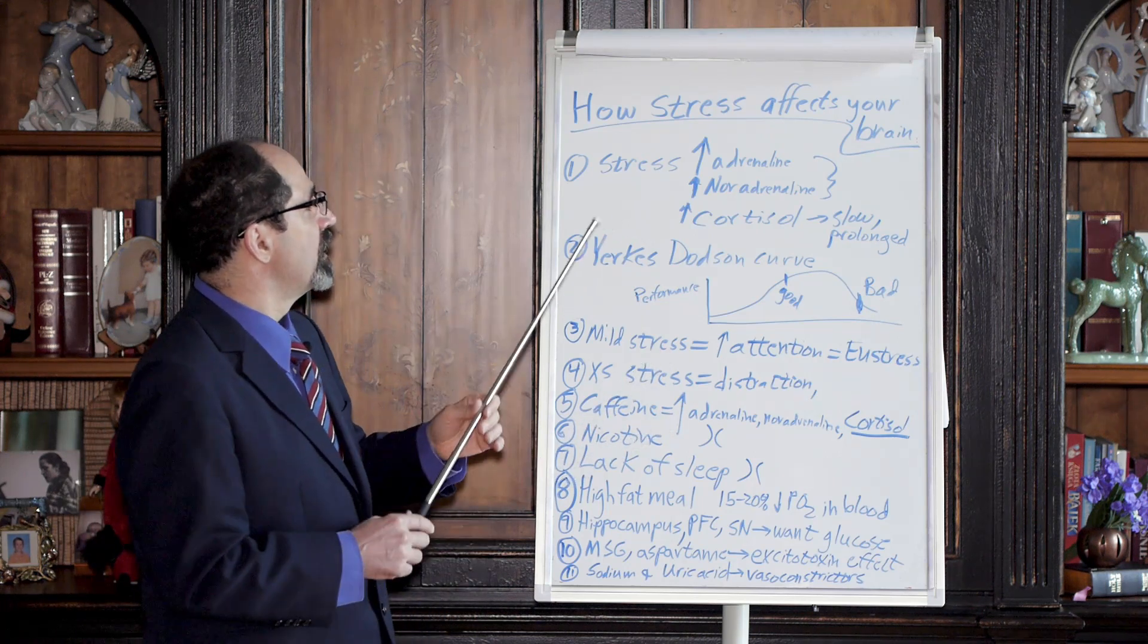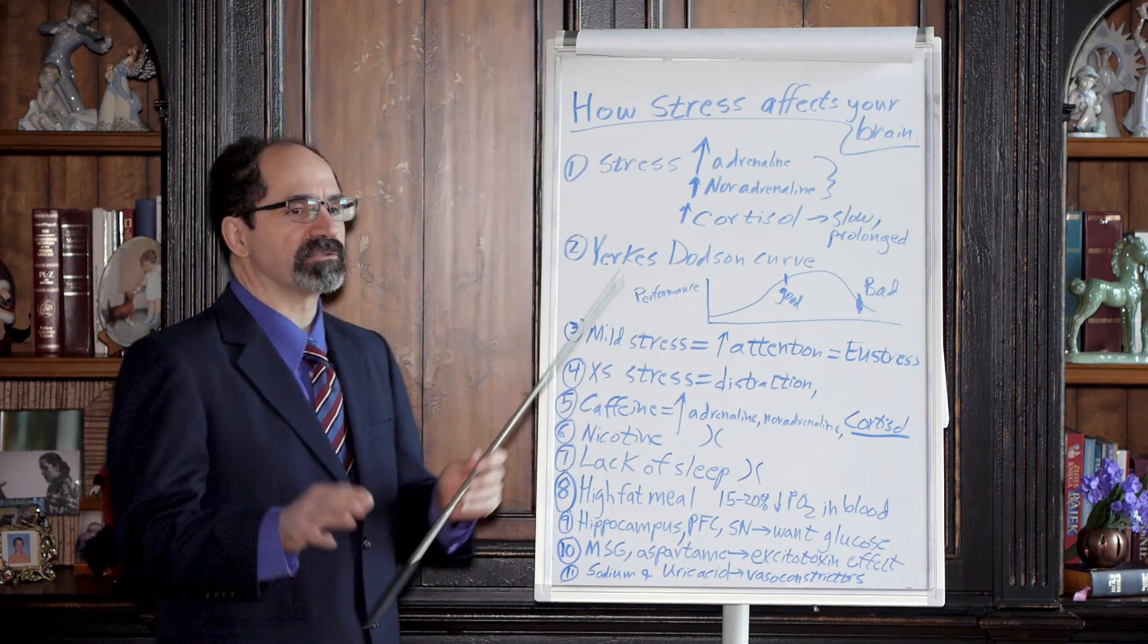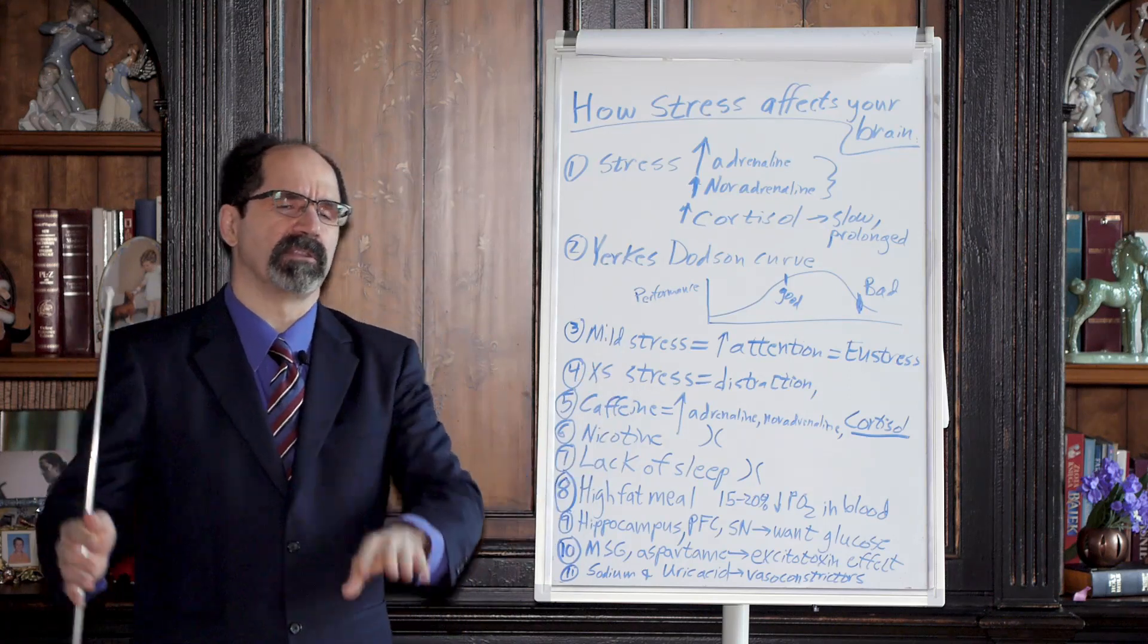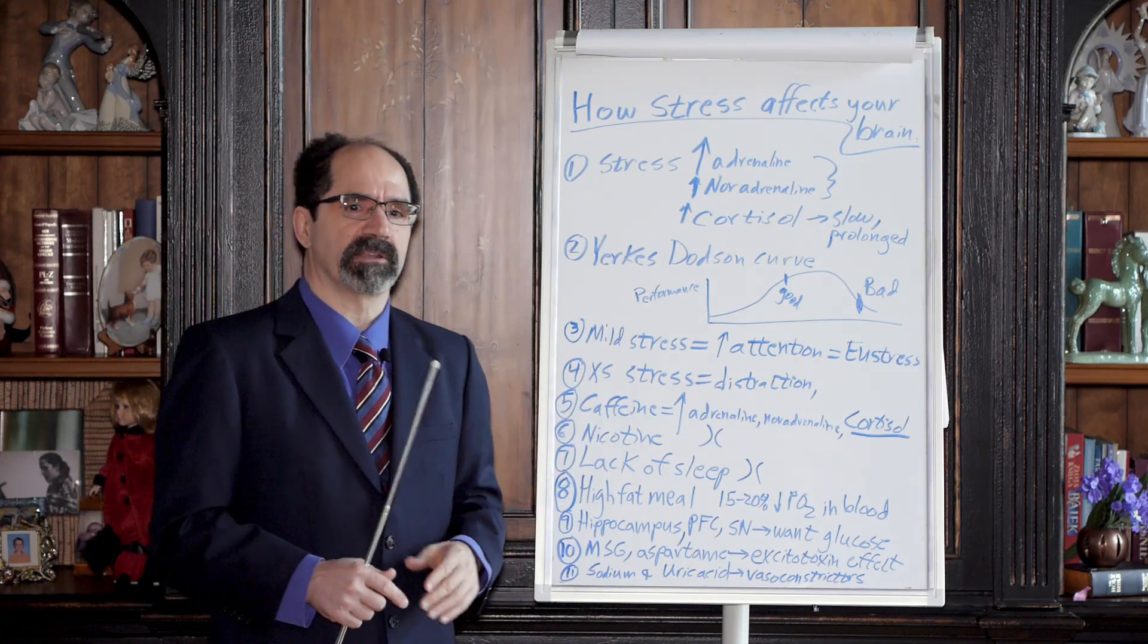So anyways, excessive stress: bad for your brain. How do you reverse it? Eat good food, get your sleep. We'll talk about that in other lectures. There's a whole lecture on that. So that's it for stress effect on the brain.